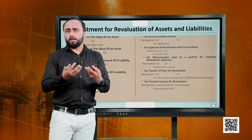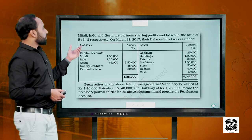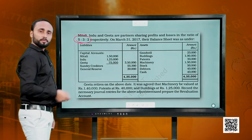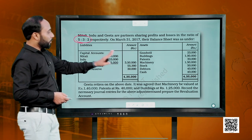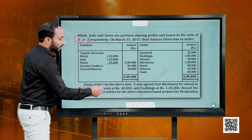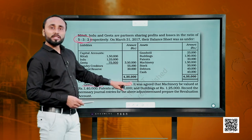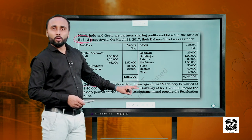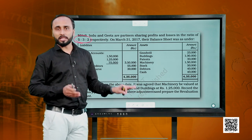Let us strengthen our understanding with an example. Mitali, Hindu and Gita are partners sharing profits and losses in the ratio of 5:3:2. Gita retires. You have to pay attention to the adjustments given below the balance sheet because these adjustments tell you what changes have taken place in assets or liabilities and give you the amounts to show in the revaluation account.